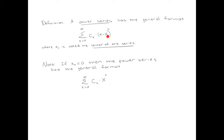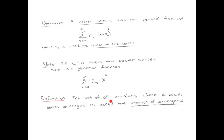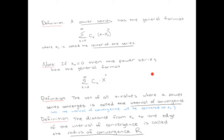Notice that if the center is equal to 0, then I just get x to the k, and the power series has this condensed format. The set of all x values where the power series converges is called the interval of convergence. What will end up happening in all of these problems is that x_0, the center of the series, will end up being the middle of the interval of convergence. Measured from the center, the distance to the edge of the interval is called the radius of convergence.